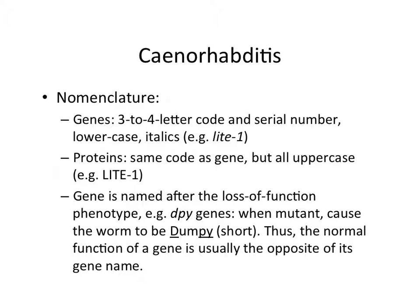Drosophila genes are named after phenotypes too - Torpedo, Gherkin. They're bizarre, but some of them have nothing to do with the phenotype, or at least it's hard to see how. Sonic Hedgehog, Indian Hedgehog, Desert Hedgehog. At least in C. elegans, the phenotypes are kind of descriptive. In Drosophila, I'm not sure anymore - I think people are just making things up.